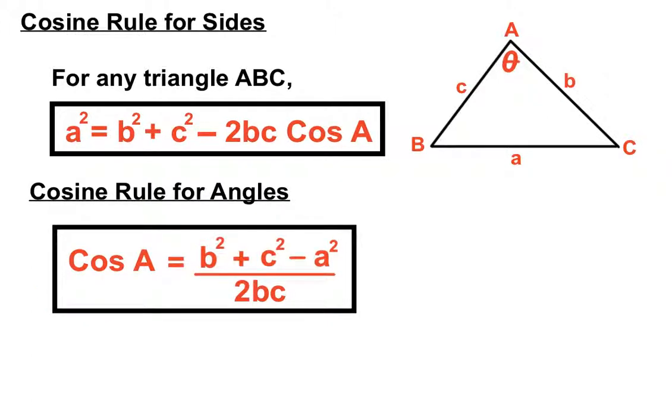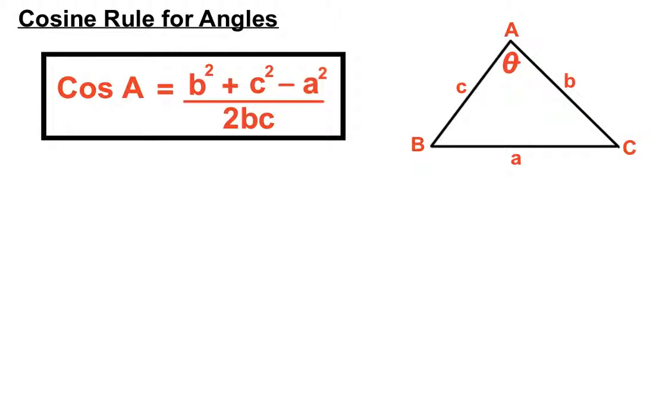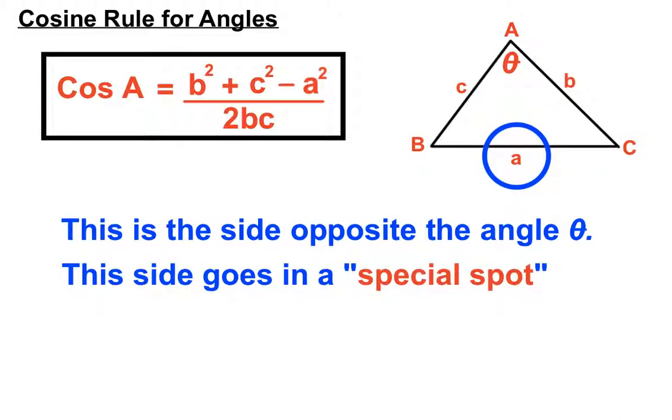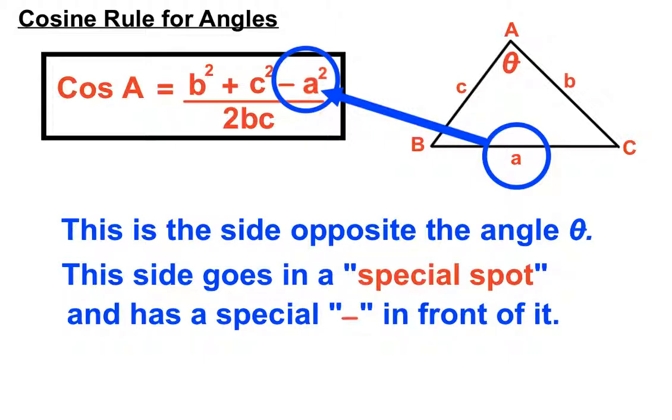On the cosine rule for angles, cos A equals b squared plus c squared minus a squared over 2bc. I'm here to explain a bit about the special side that I was talking about. That a there is in a special position. It's the side that's opposite the angle θ. This is the angle we're trying to find in the end. The side that's opposite that is what we call the special angle. It's going to be put in a special spot into the formula.